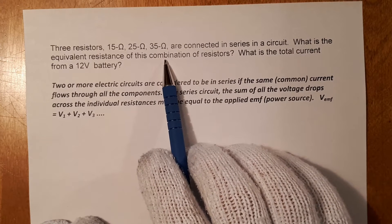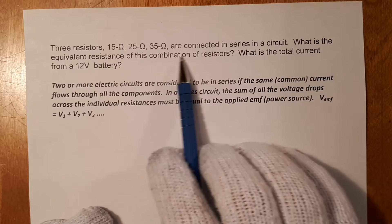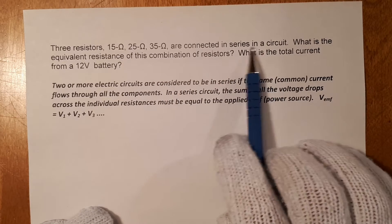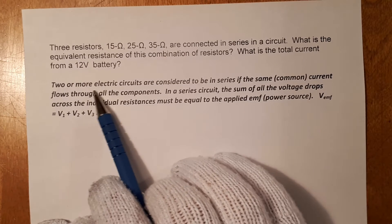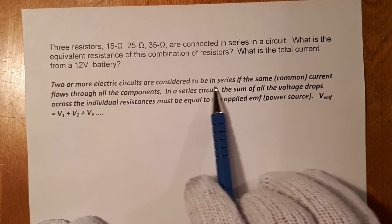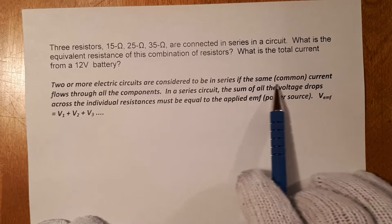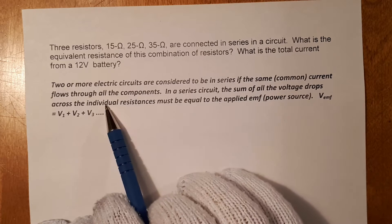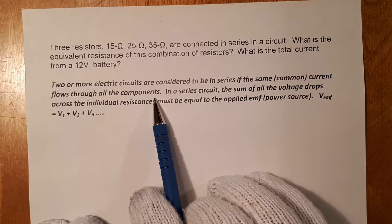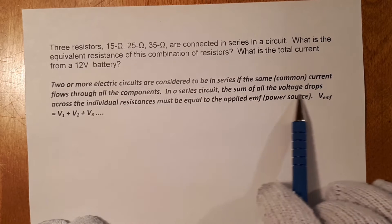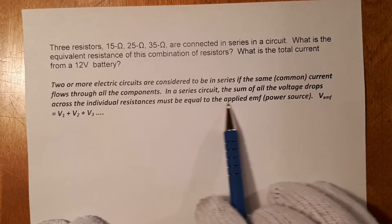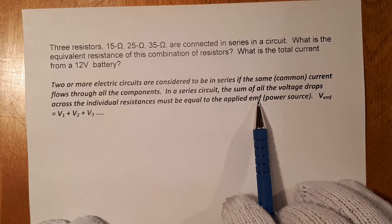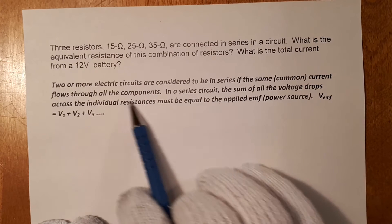Here is a series circuit which I solved earlier. But what exactly happens in a series circuit? I have a comment written here. It says two or more electric circuits are considered to be in series if the same common current flows through all of the components. In a series circuit, the sum of all the voltage drops across the individual resistances must be equal to the applied EMF. What does all of this really mean?